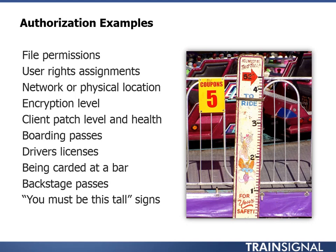User rights assignments are another good example of authorization. In a Windows operating system, there's a group for users and a group for administrators. Users have some user rights assigned — they can browse the file system and edit files in their own documents folders. Administrators have more privileges; they're authorized to do more things like install new software and install updates. In this way, user rights are an authorization method.